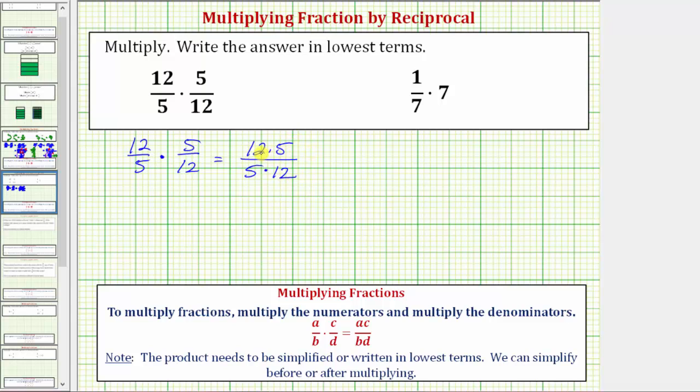Now if we multiply, notice how we'll have 60 over 60 or 60 sixtieths, which is equal to 1. But normally we simplify before we determine these products by simplifying out all the common factors other than 1 between the numerator and denominator.